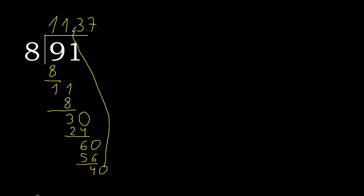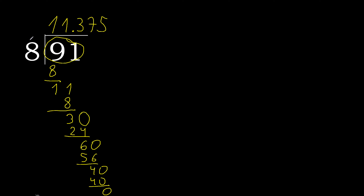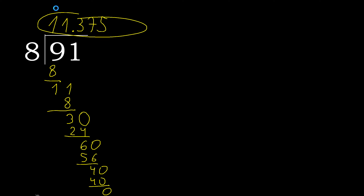The decimal point is here. Bring down 0, making 40. 8 multiplied by 5 is 40. 40 minus 40 is 0, therefore finished. 91 divided by 8 equals 11.375.